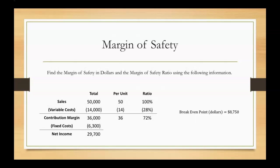We're given a CVP income statement with sales, variable costs, contribution margin, fixed costs, and net income. We also have our break-even point in dollars over to the right, which is $8,750.